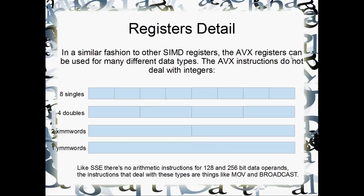In a similar fashion to other SIMD registers, the AVX registers can be used for different sized data elements - but it's mostly just floating point, not integers. I expect we'll get extensions that deal with integers as well later, but for now it's just floating point: eight packed singles, four packed doubles, two XMM words (128-bit values), or all 256 bits as a single value. There are no real arithmetic instructions for the full 128 and 256-bit data operands - just MOV, broadcast instructions, and similar.